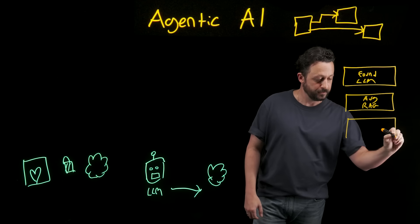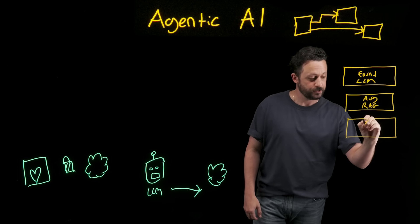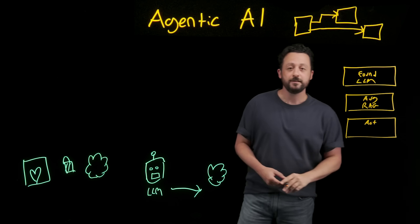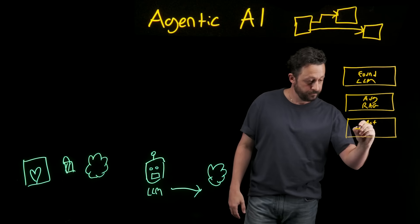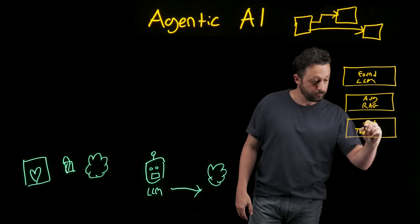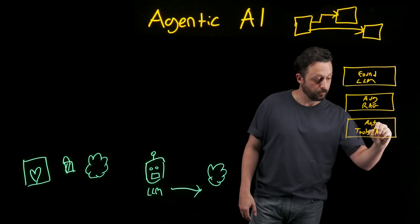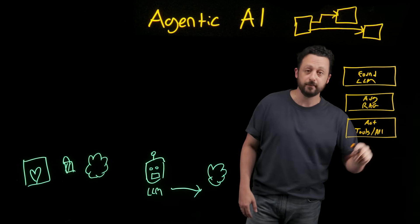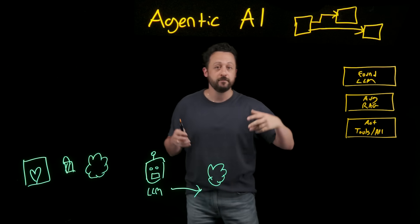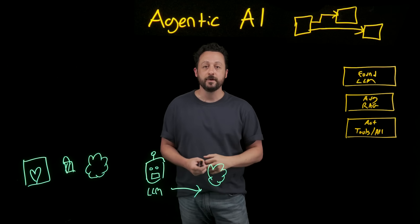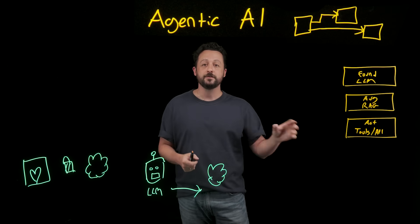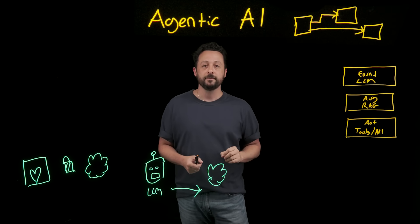And finally, we have our action layer. This is where the tools and the APIs that your agent needs to use in order to function will live. So when it makes a call to your DB, or when it creates any kind of information that it needs for you, this is where it's going to live.